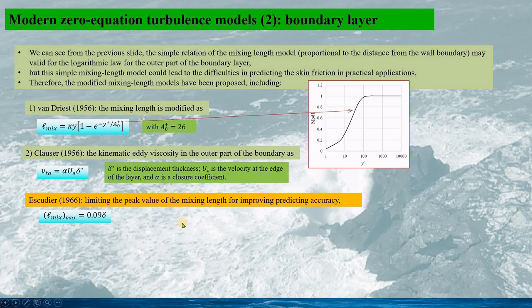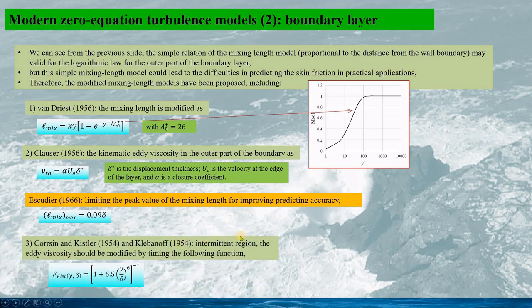And Cebeci and Smith in 1966, by limiting the peak value of the mixing-length, so for improving predicting accuracy by this formula. Cosslett and Kistler in 1954 and Klebanoff in 1954.